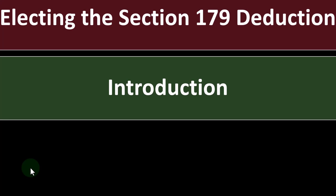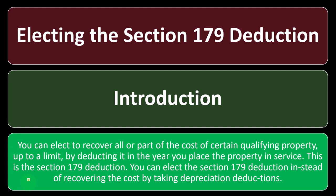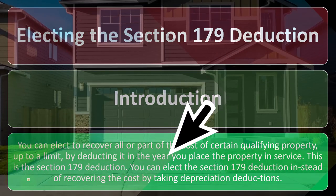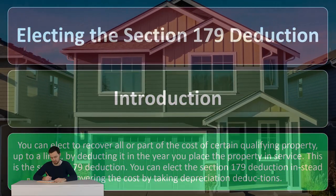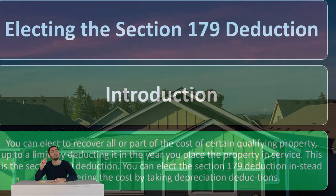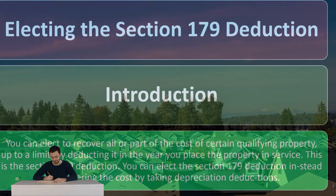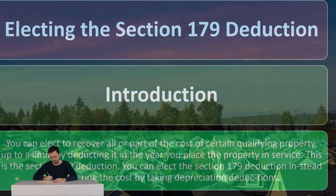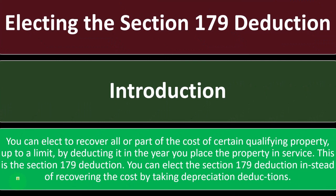So electing the 179 deduction — introduction. You can elect to recover all or part of the cost of certain qualified property, up to a limit, by deducting it in the year you place the property in service. It's important to think about this election when you place the property in service, because that's the point in time when you could take the election or not. Normally, if you could take the election, usually we would want to, because that would allow us to deduct sooner. The typical tax planning strategy is: I'd rather have the deduction sooner than later because of the time value of money and the possibility that the tax code could change.